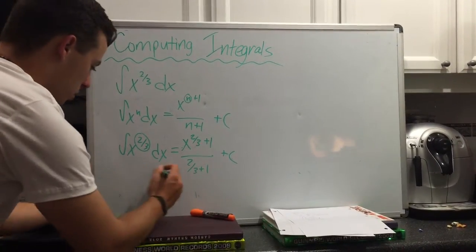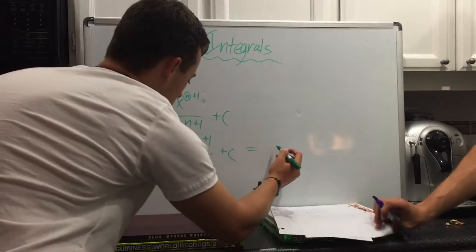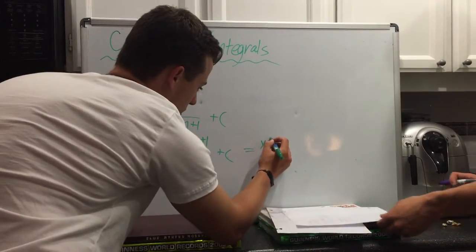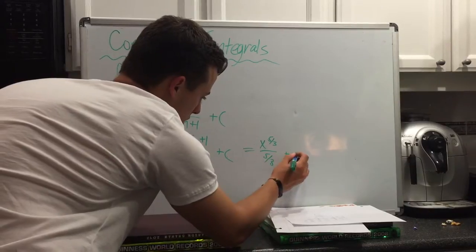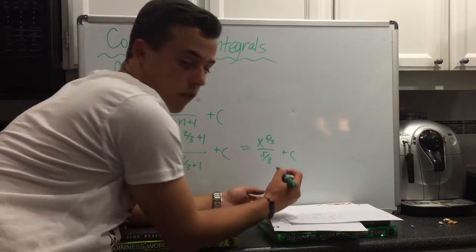That simplifies to x to the 5/3 over 5/3 plus c. When you divide by 5/3,